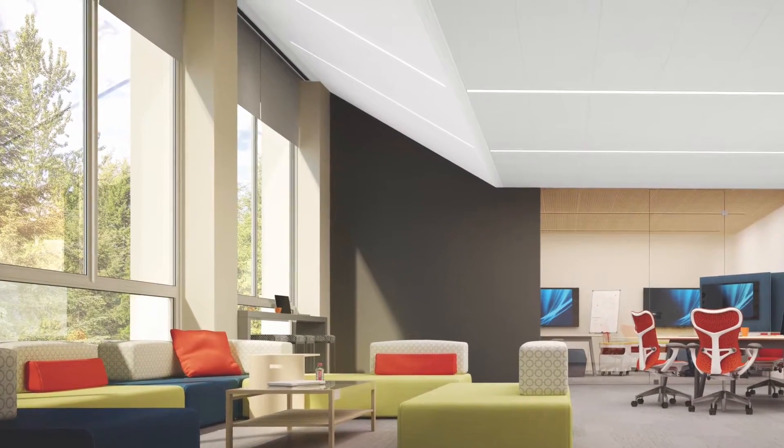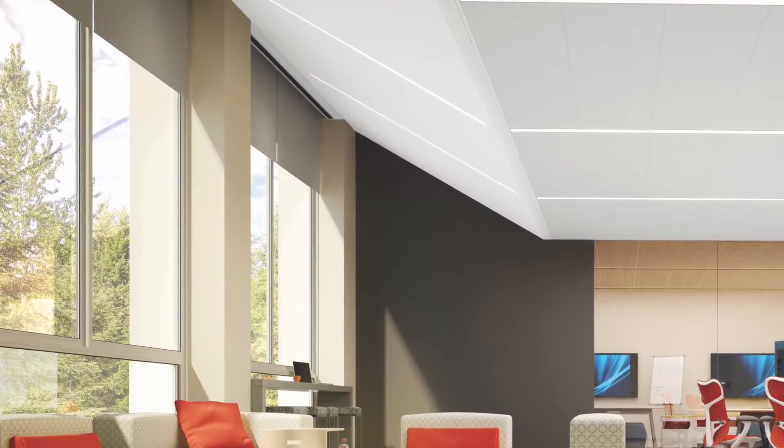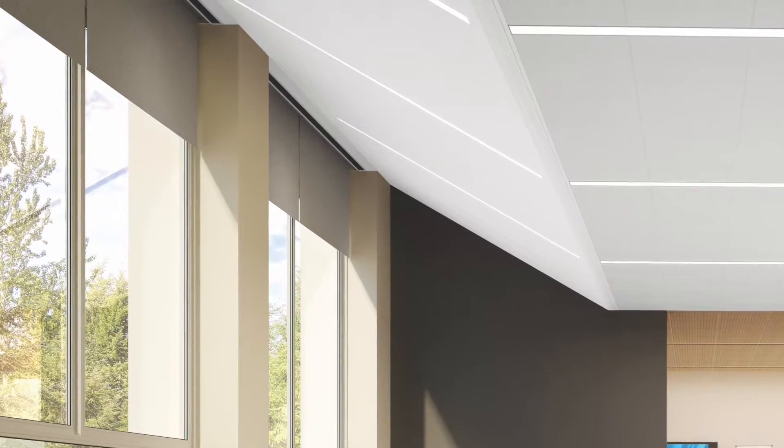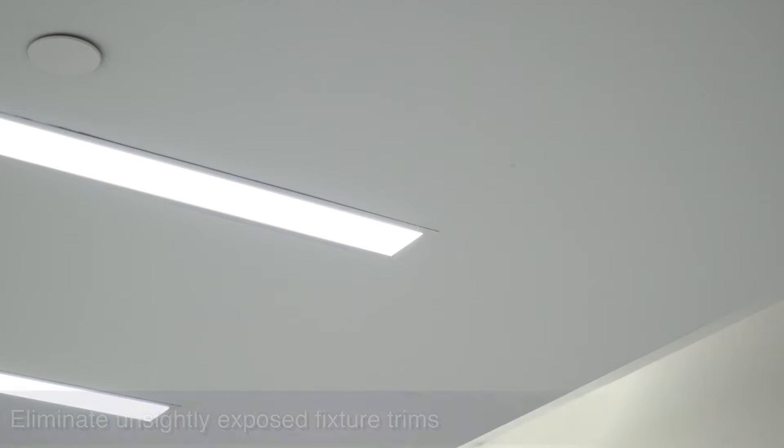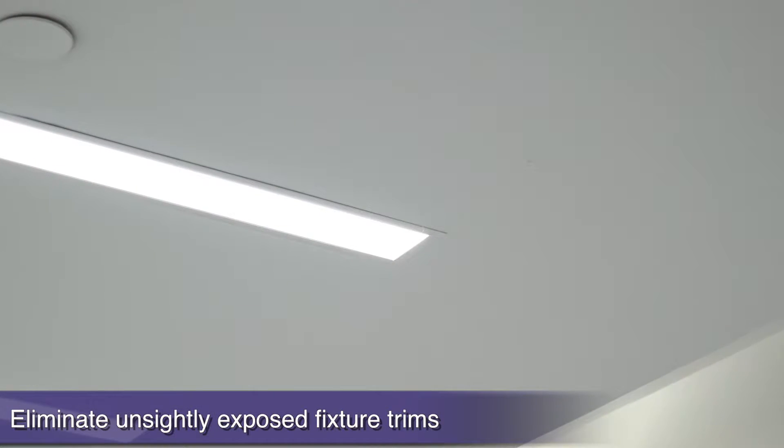LED drywall linear lighting is the ultimate in a clean, uninterrupted visual. But how do you visually integrate it with acoustical linear fixtures when that is necessary? Also, how do you eliminate unsightly exposed fixture trims when all you really want is a seamless transfer from drywall to lighting?